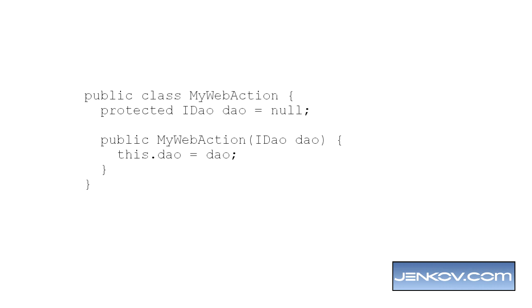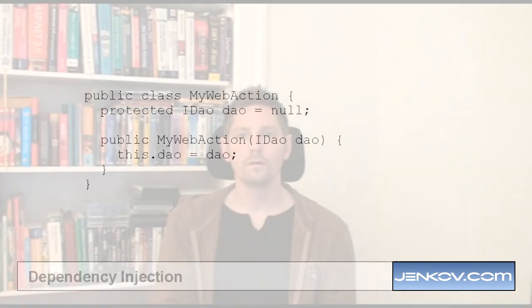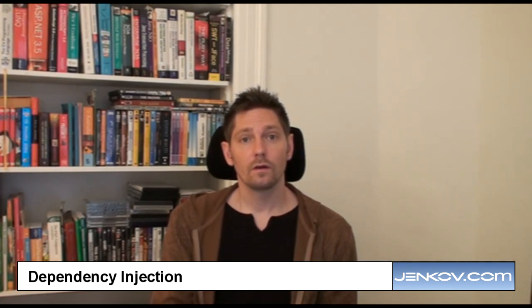Here is a slightly changed implementation of myWebAction. Instead of instantiating the DAO input inside the myWebAction instance, it now just sets the DAO member variable to null. And then in the constructor, it takes a DAO instance — an iDAO instance. This way, you can configure from the outside: when instantiating myWebAction, you can configure what iDAO implementation the myWebAction object is going to use. Configuring an object like this from the outside, by either passing the dependencies to its constructor or to a setter method, is called dependency injection.